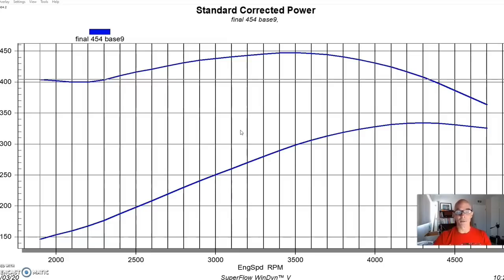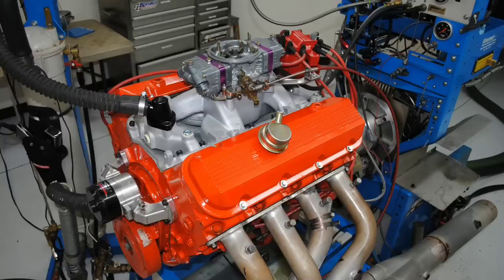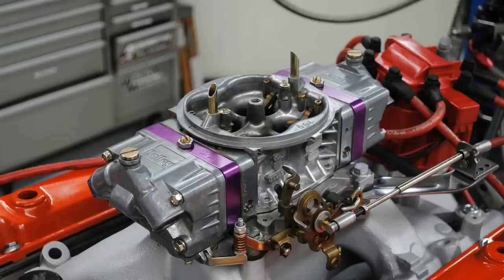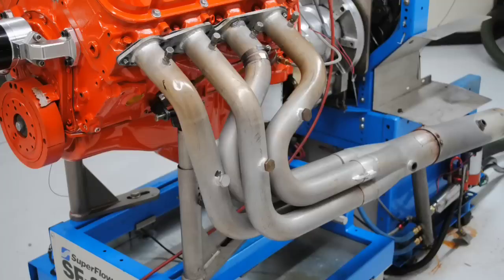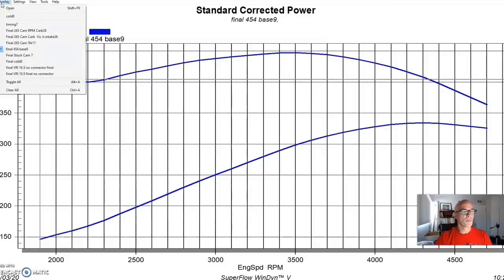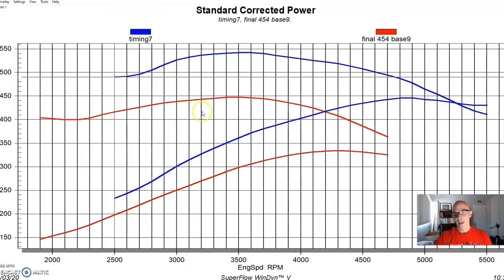We put the thing back up on the dyno and ran it again with a dual plane intake and a 750 Holley and the long tube headers. We obviously optimized the timing and stuff also.